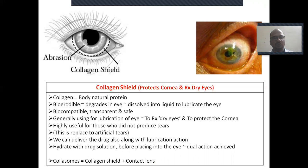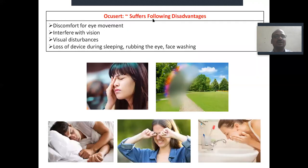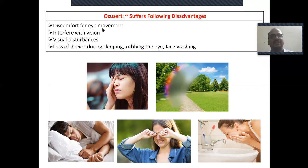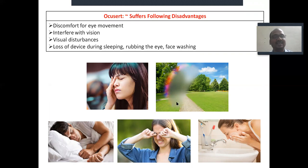Collosomes are a new dosage form combining a collagen shield along with a contact lens. Accuserts have some disadvantages: they cause discomfort because you always feel something in the eye. Eye movement causes discomfort, and there is a possibility of interfering with vision — visual disturbances. There is also the risk of loss of the device during sleeping, rubbing of the eye, or face washing.